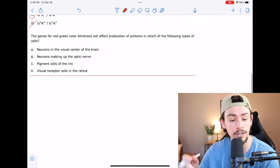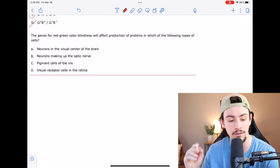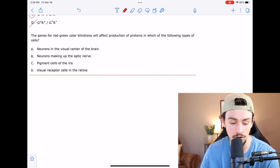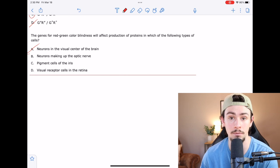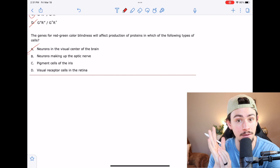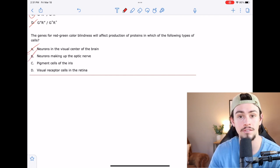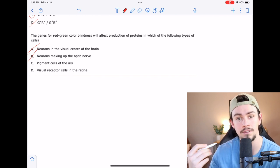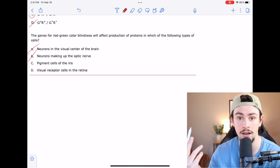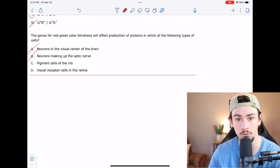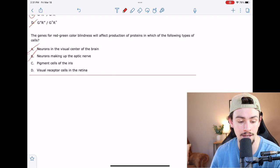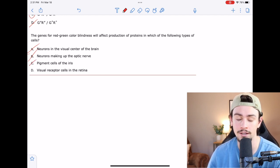This last one says the genes for red-green color blindness will affect production of proteins in which of the following types of cells. They're just saying, where does this pigment lie? A says in the neurons of the visual center of the brain. No, the pigment's not in the neurons, the pigment's in the retinal cells. B says neurons making up the optic nerve. Remember, we have to have the pigment to transmit the impulse to our neurons. C says the pigment cells of the iris. This is a pretty attractive answer choice just because we can visually picture the pigment cells in an individual's iris. But those are actually not the pigment cells that are absorbing color. When you look at my eyes and I have brown eyes, or you look at someone's eyes and they have blue eyes, that's not the pigment cells that are actually absorbing color. So even though there are pigment in those cells, those are not the ones that are absorbing color. The pigment cells that are absorbing color are on the retina. D says the visual receptor cells in the retina. That's the correct answer choice.